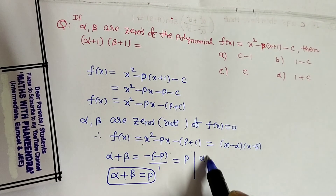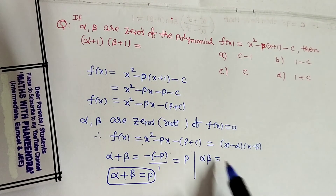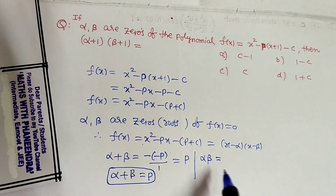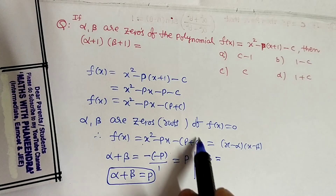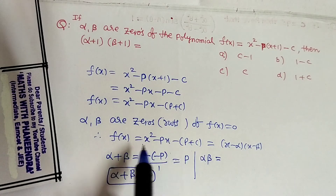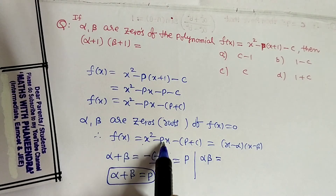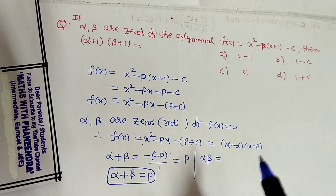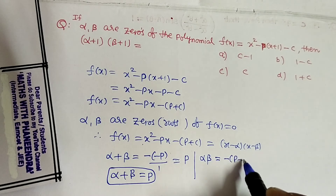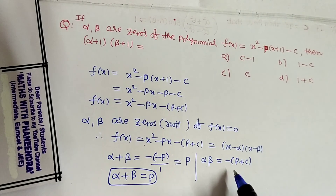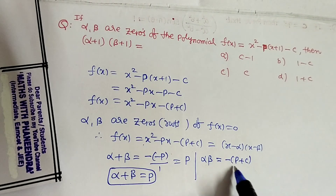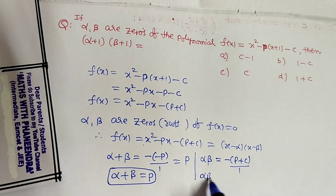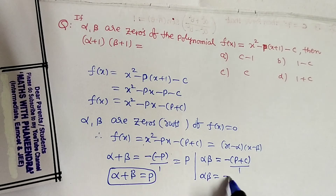Next, product of the roots. Alpha beta equals c by a. The c value here, comparing with a x squared plus b x plus c, is minus of p plus c, and a value is 1. So alpha beta is equal to minus of p plus c.